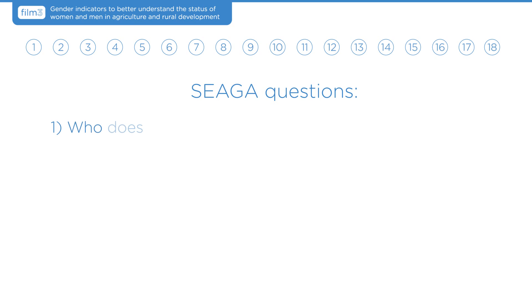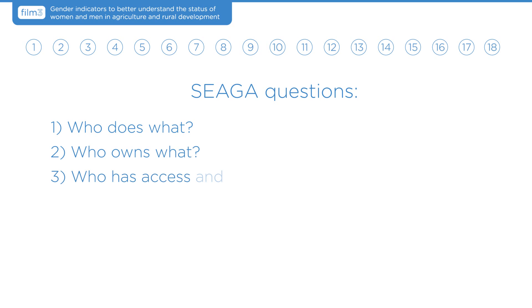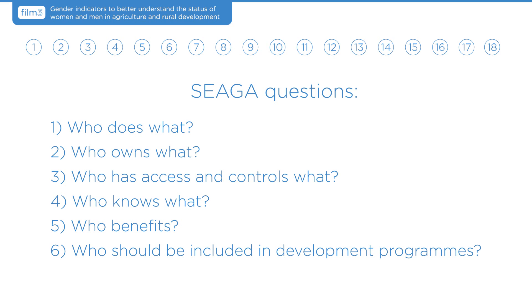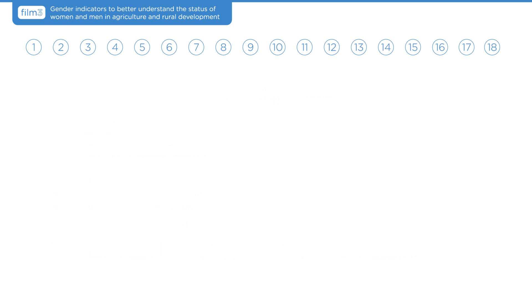The six SEGA questions are: 1. Who does what? 2. Who owns what? 3. Who has access and controls what? 4. Who knows what? 5. Who benefits? 6. Who should be included in development programs? All indicators respond to SEGA question number 6 and one or more of the other SEGA questions.